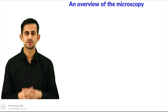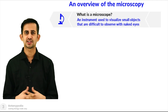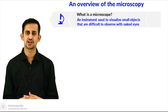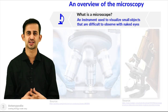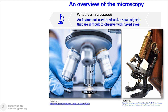Let's have an overview of this technique. A microscope is an instrument that is used to visualize objects that are difficult to be seen with the naked eye. On the left hand side you can see how a slide is being mounted on a stage of a light microscope to visualize its image, and on the right hand side you can see a picture of a compound light microscope.